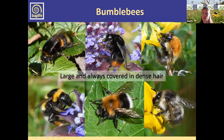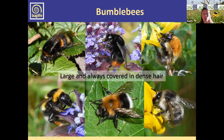Social bumblebees are divided into queens, worker daughters, and males. Because cuckoo bumblebees don't look after their own young, they're just divided into male and female. When identifying bumblebees, it's an important point that for social bumblebees we've got three castes to identify, whereas for cuckoo bumblebees we've just got the two — males and females.